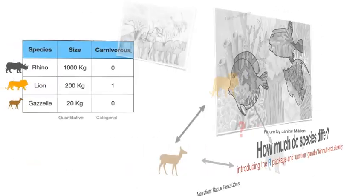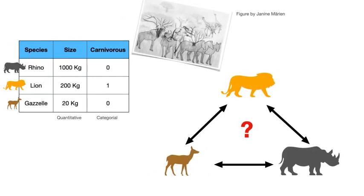Imagine you are in a savanna and you want to estimate differences in species traits — for example, between a rhino, a lion, and a gazelle. For simplicity, imagine that you have information only about two traits, as shown in the species trait matrix here. The matrix includes information about species size, expressed in kilos, and diet, expressed as whether the species are carnivorous or not.